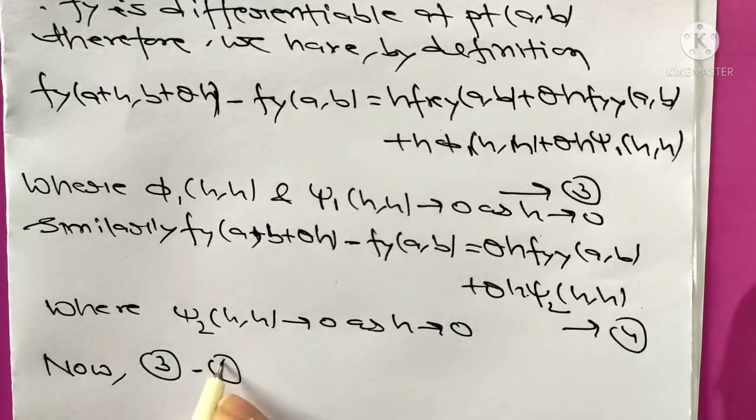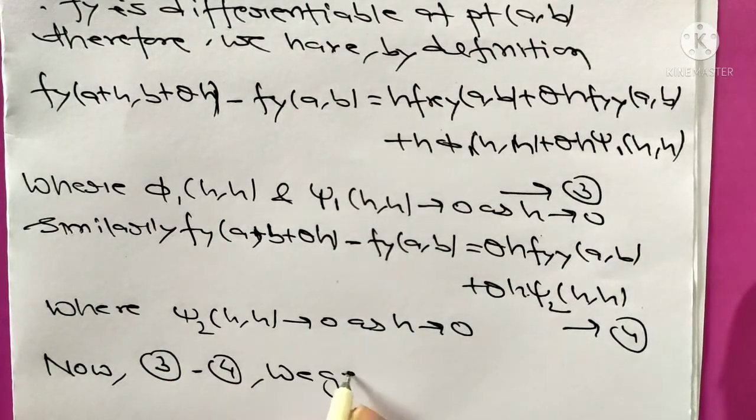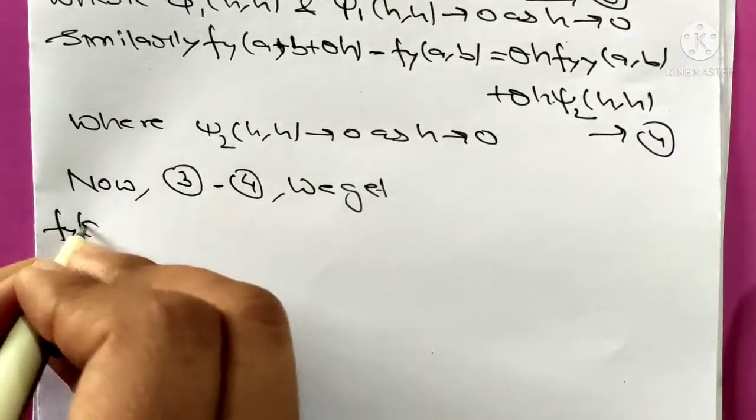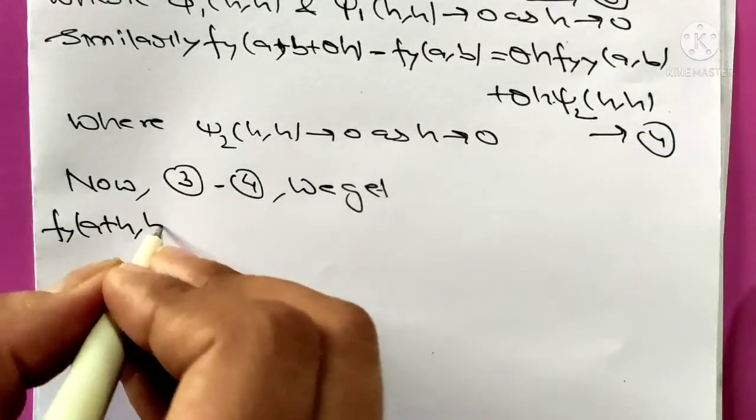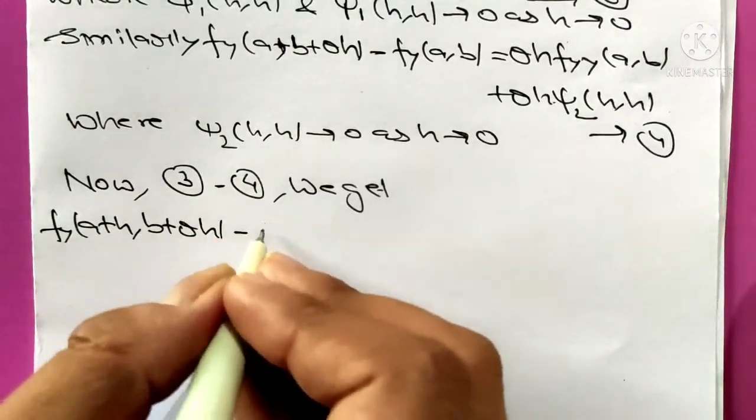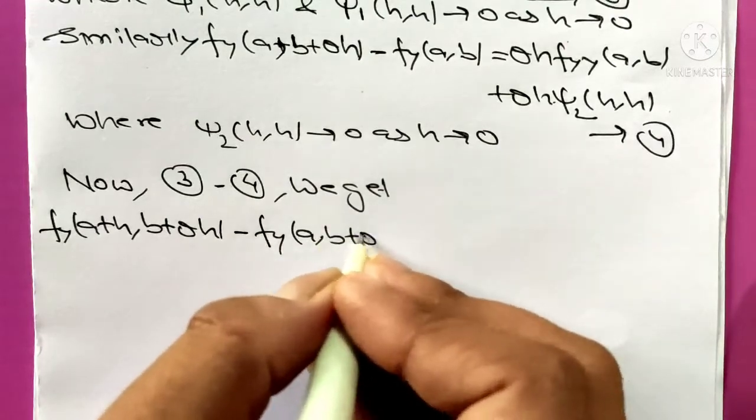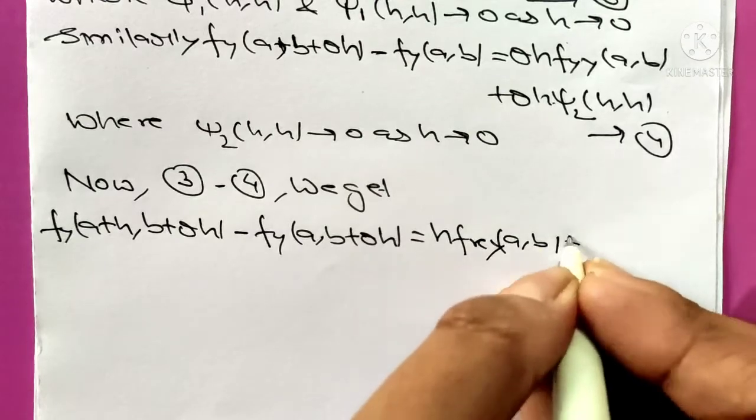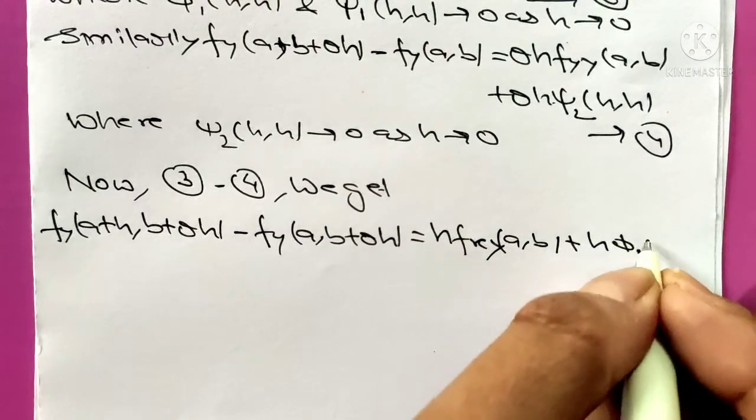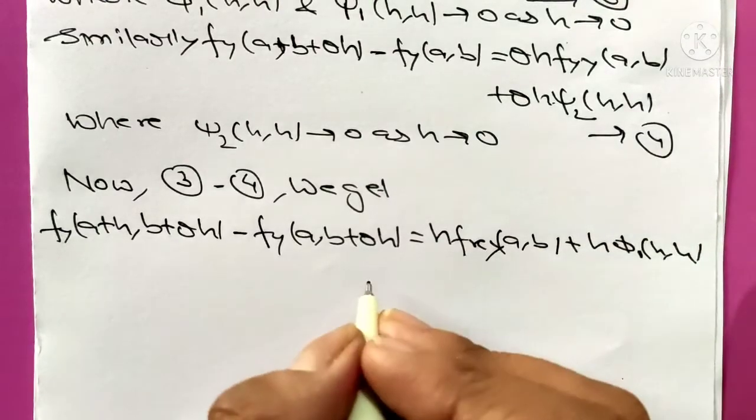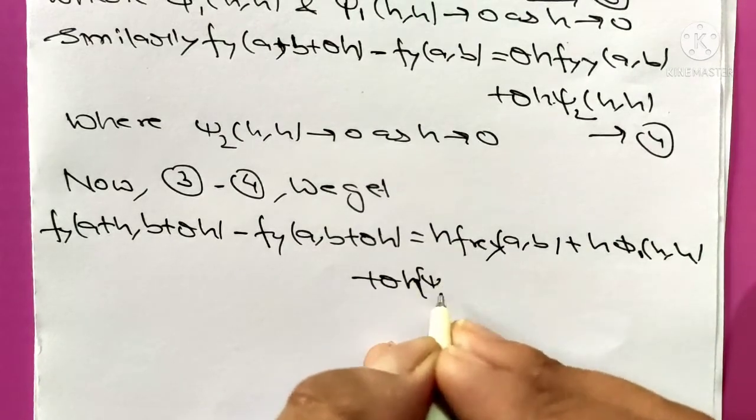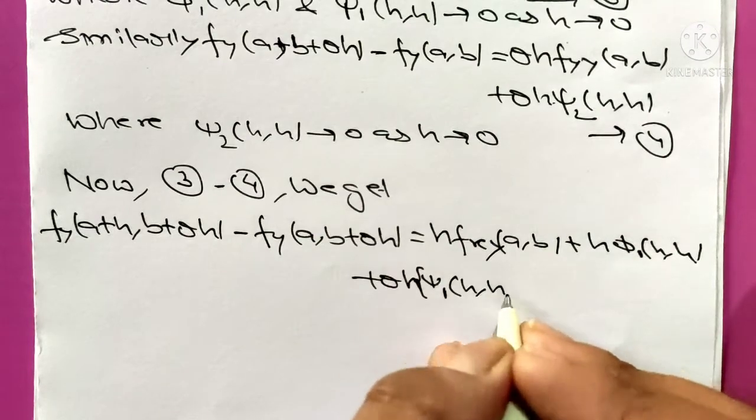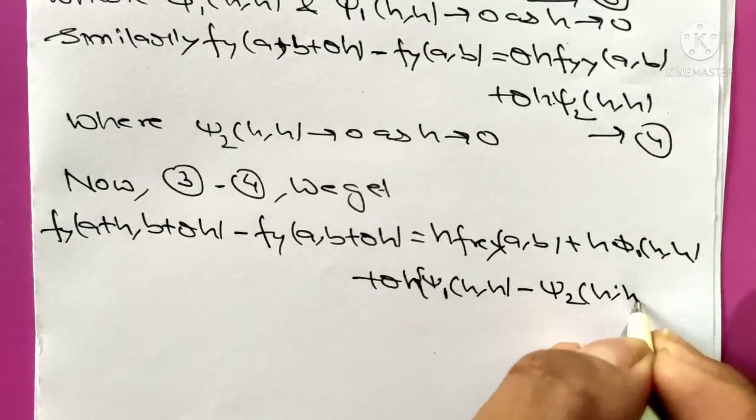Subtracting equation 3 minus 4 we get: fy(a+h, b+θh) minus fy(a, b+θh) equals h times fxy(a,b) plus h times φ1(h,h) plus θh times [ψ1(h,h) minus ψ2(h,h)].